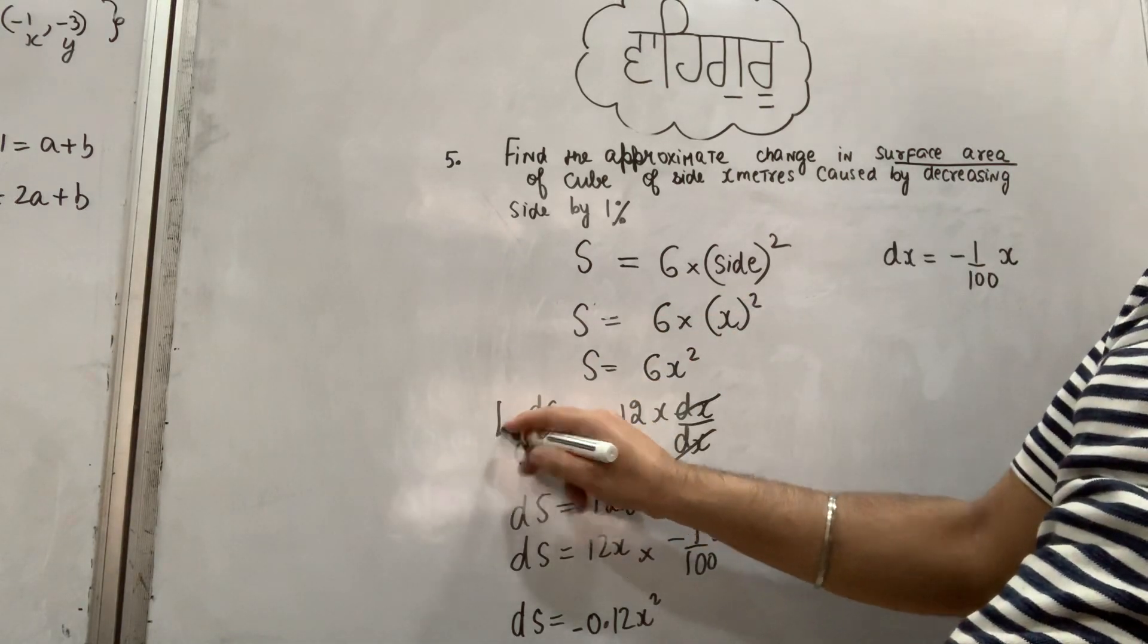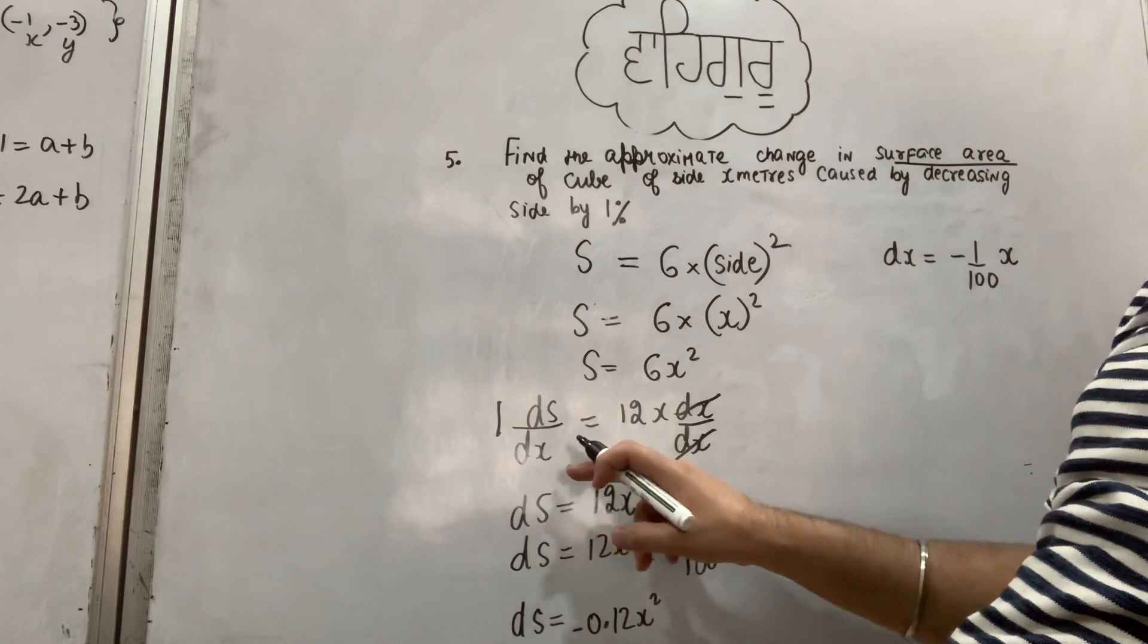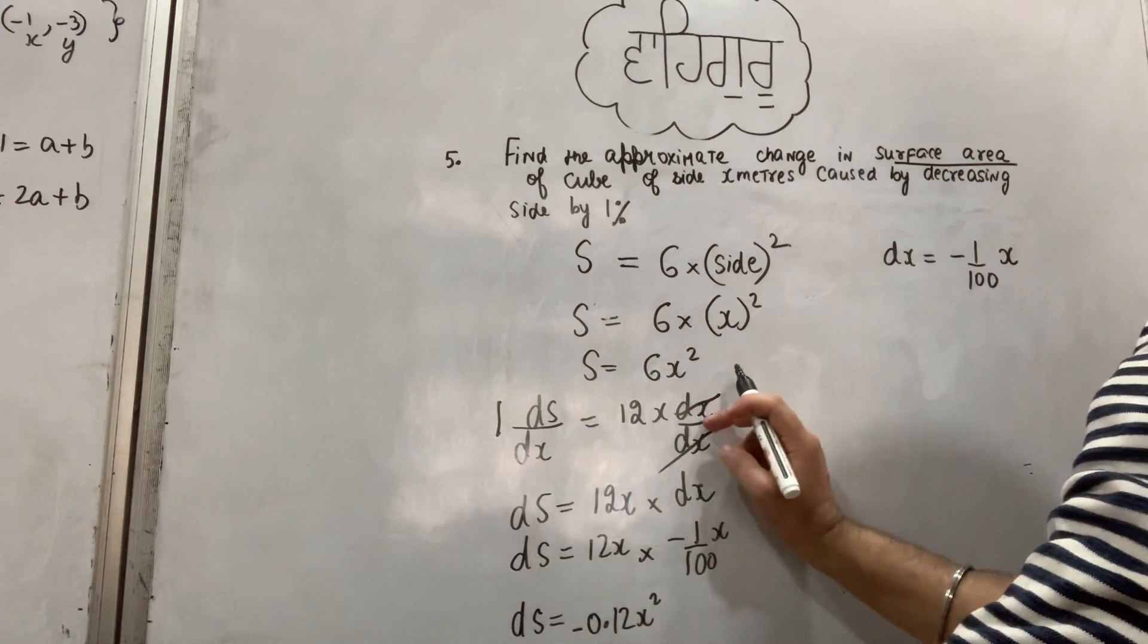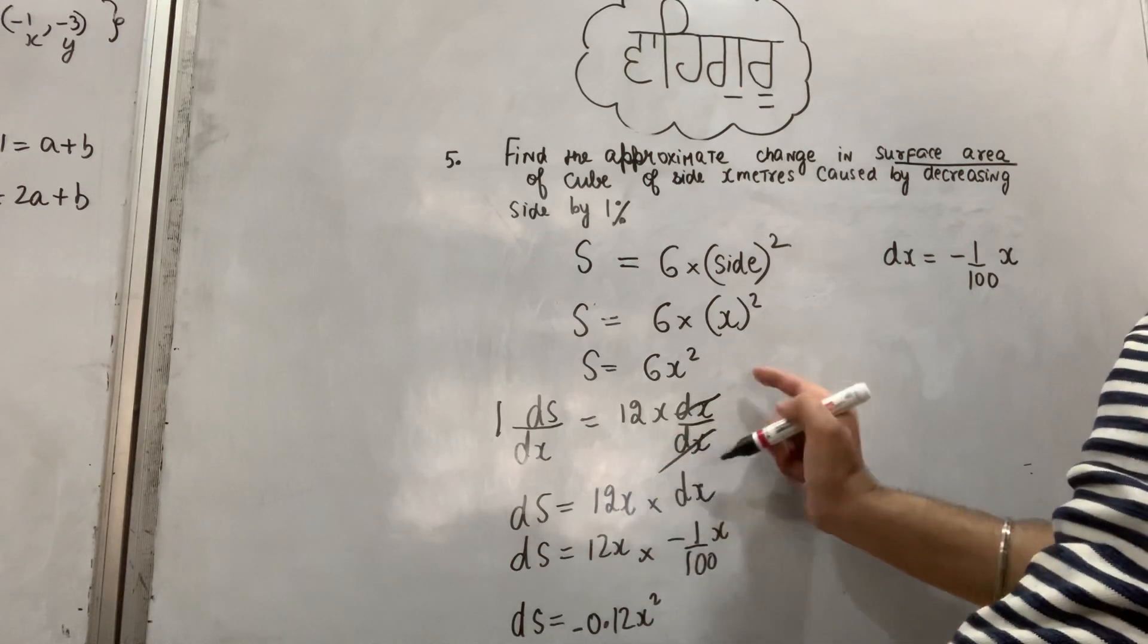Taking the derivative: dS/dx with respect to x, this is 12x. The derivative is dx with respect to x.